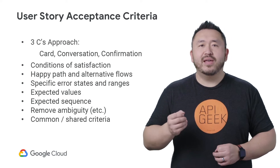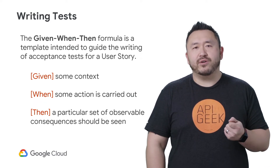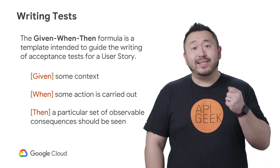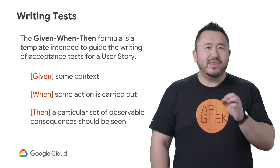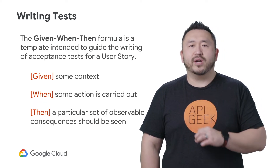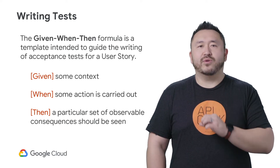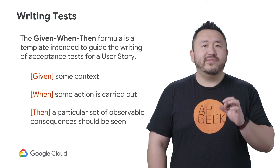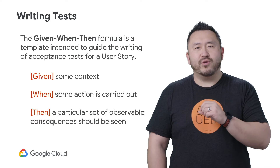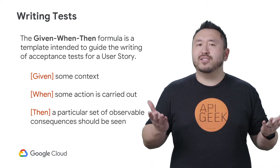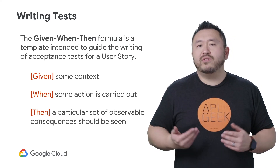A more advanced form of writing acceptance criteria is using the BDD and Gherkin style of writing. This format is the given-when-then (GWT) style of test writing. This process has the same intent and outcome as acceptance criteria. However, with Gherkin, development teams have found this format helps avoid more missed requirements, is more developer-friendly, and transferable to test automation. Tests can be written by the product owner, the QA engineer, or developers up front.